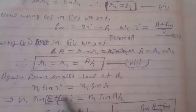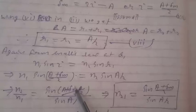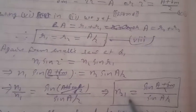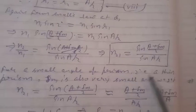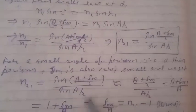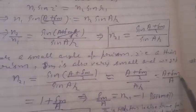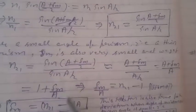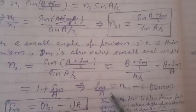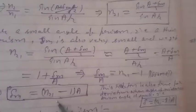Again from Snell's law at Q: N1 sin(I) = N2 sin(R1), which gives N1 sin((A + delta_M)/2) = N2 sin(A/2). Therefore N2/N1 = sin((A + delta_M)/2) / sin(A/2), or N21 = sin((A + delta_M)/2) / sin(A/2). For a small angle prism (thin prism), delta_M is also very small, giving N21 = (A + delta_M)/2 divided by A/2, which simplifies to delta_M = (N21 minus 1) × A.